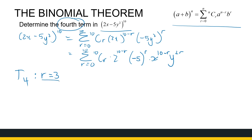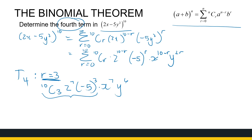So my fourth term is where r = 3. You must determine what r you're looking for. So the fourth term is going to look like this: r = 3, so we're only looking at one specific term. That gives us 10C3, 2 to the power 7, times (−5) to the power 3, times x to the power 7, times y to the power 6.